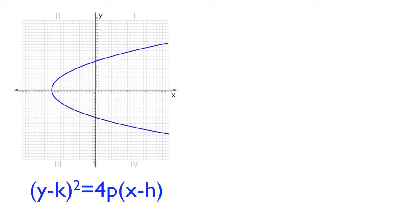If the parabola has a horizontal axis, it will be described by the standard equation y minus k squared equals 4p times x minus h.